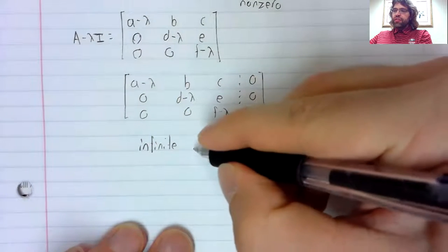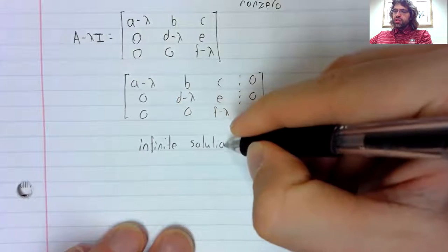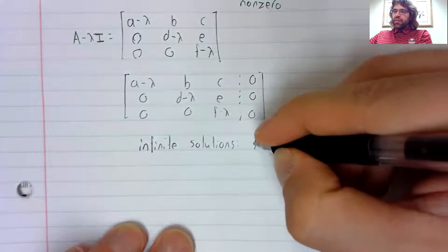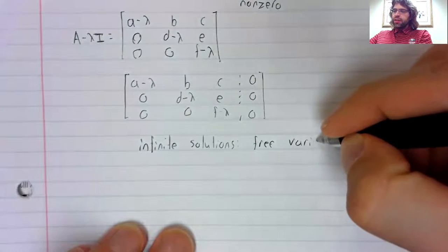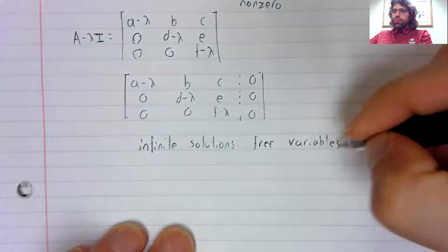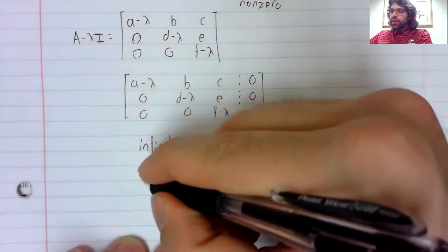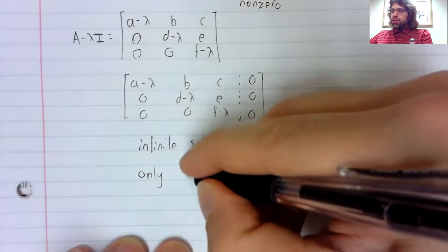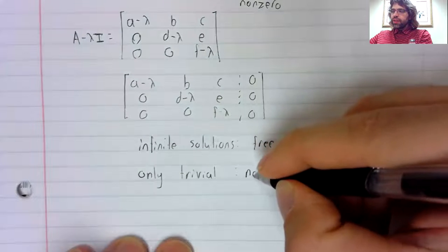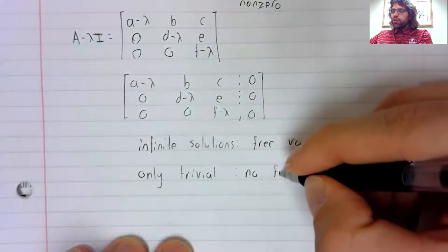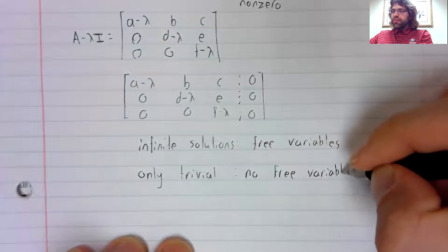It has infinite solutions if there are three variables, at least one free variable. And it has only the trivial solution if there are no free variables.